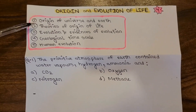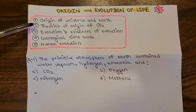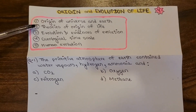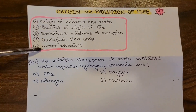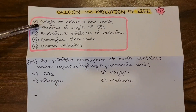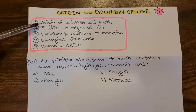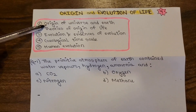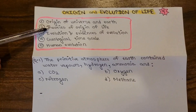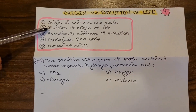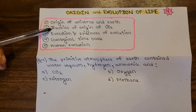Hello everyone, welcome to Medical Aspirants Library. Today's topic is origin and evolution of life. Let's get quickly into it. This chapter is huge, so let's divide the topic. Quick overview: origin of universe and earth, primitive atmosphere and what gases were present, and theories of origin of life — theory of special creation, theory of catastrophism, panspermia, spontaneous generation, and biogenesis.